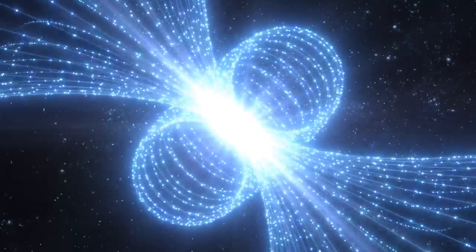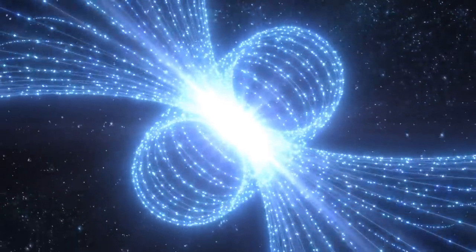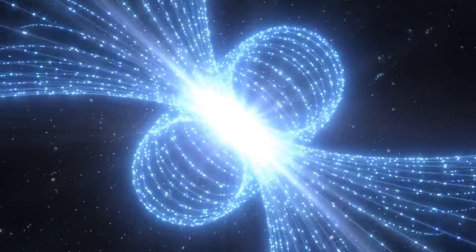Voyager's magnetometer found that Uranus' magnetic field was found to significantly offset its axis of rotation.